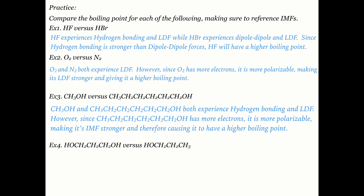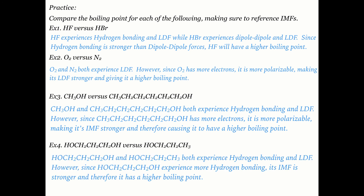In the final example, one molecule has two OH groups and the other has one OH group. Both experience hydrogen bonding and LDF, and their sizes are similar, so LDF strength is comparable. The key difference is that the first molecule can form more hydrogen bonds per molecule than the second. Since it experiences more hydrogen bonding, its intermolecular forces are stronger and it has a higher boiling point.